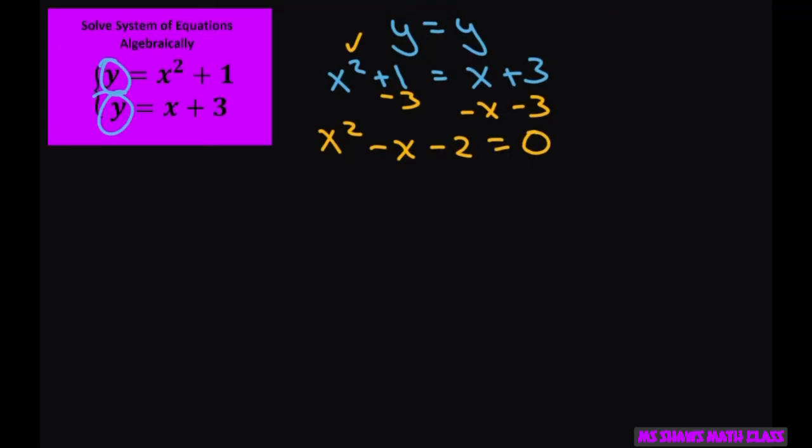Now let's factor that, and we get x minus 2 times x plus 1 equals 0. Using our zero product property, we have x minus 2 equals 0.